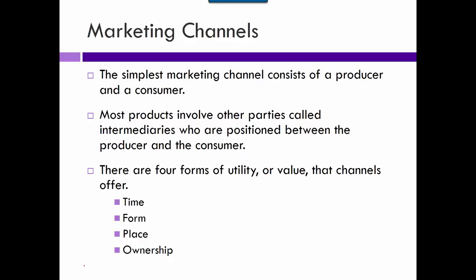At its simplest form, a marketing channel is just a producer straight to the consumer — like at a farmer's market or a craft show. Most other transactions will involve an intermediary somewhere between the producer and the consumer. These intermediaries perform services for both sides that add value for the customer or make things easier for the producer. They help with four things: time, form, place, and ownership.